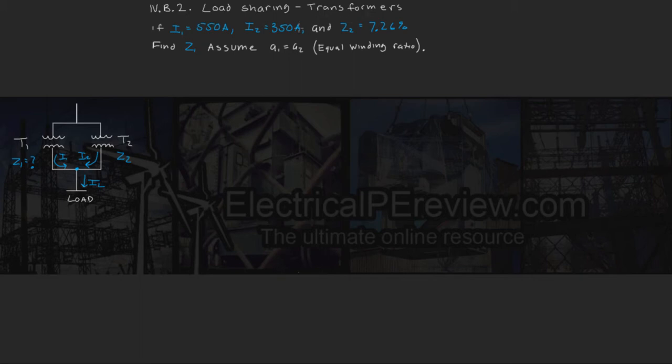This time we know both of the currents from each transformer, however, we only know one of the impedances and we're asking to find the other.